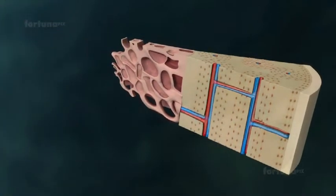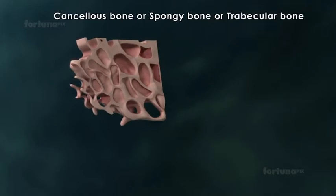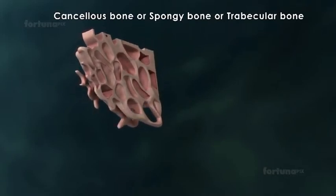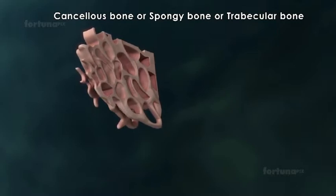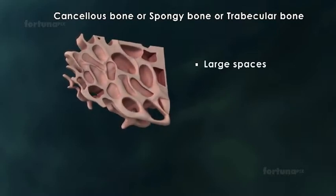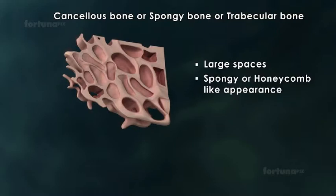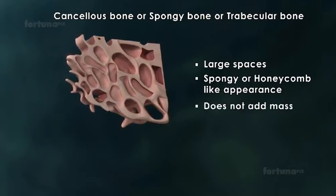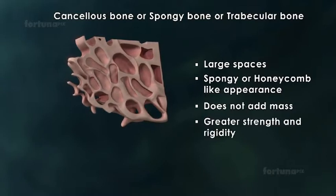Inside the compact bone is the cancellous bone, commonly referred to as spongy bone or trabecular bone. This layer is filled with numerous large spaces, giving it a spongy or honeycomb-like appearance. The porous nature of the spongy bone does not add mass to the overall structure, but still provides greater strength and rigidity.